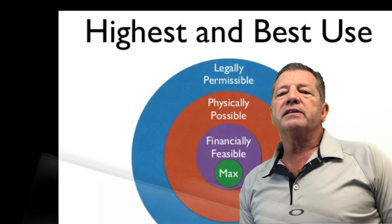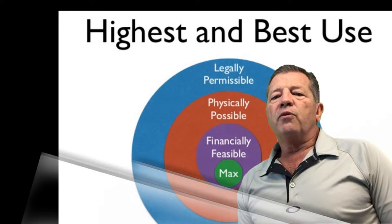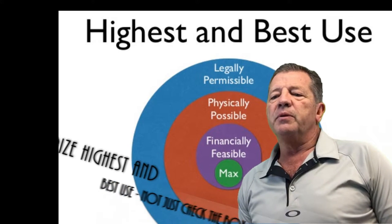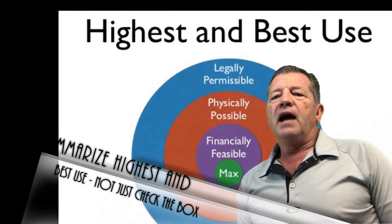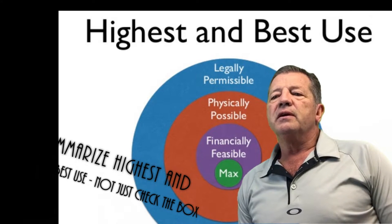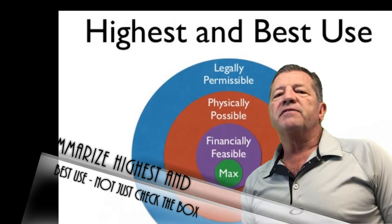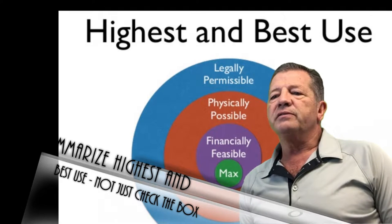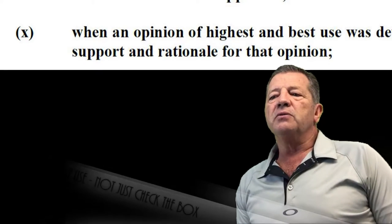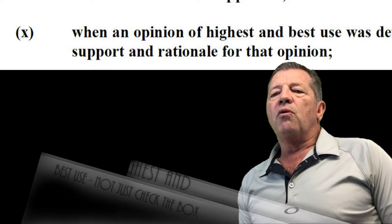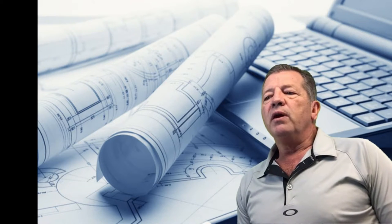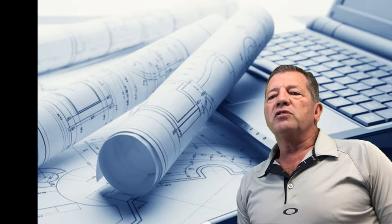Number two on the list is highest and best use. USPAP indicates that when the purpose of the appraisal is to develop an opinion of market value, the highest and best use must be summarized in an appraisal report. Oftentimes, the appraiser has checked the box but has failed to provide the additional summarization of that highest and best use. This becomes particularly important when the property is located in a commercial zone, is a non-conforming property under current zoning, or when the land size is larger or smaller than typical.